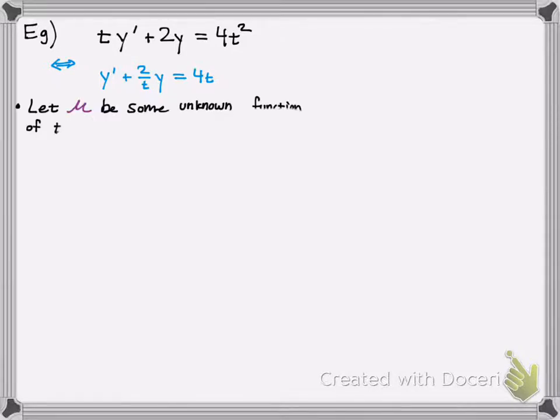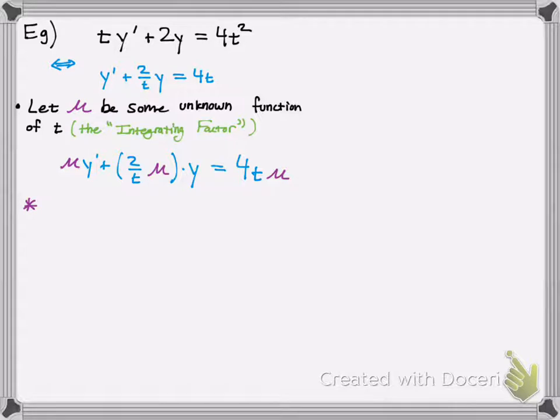So now by using the integrating factors method, we're going to let mu be some unknown function of t, just as we discussed before, which is the integrating factor. And we're going to multiply the integrating factor to every term, to each term.